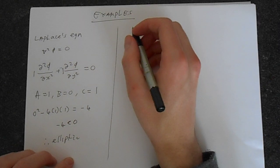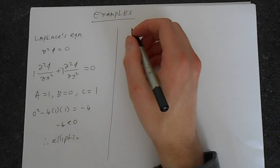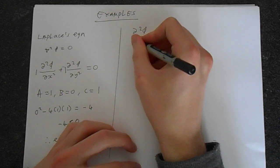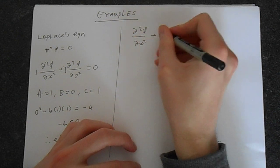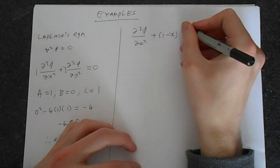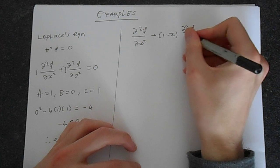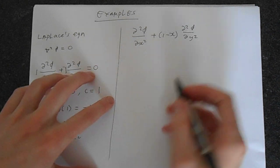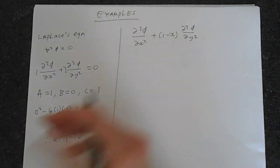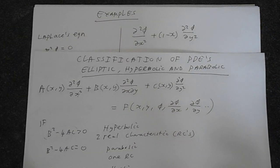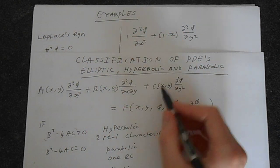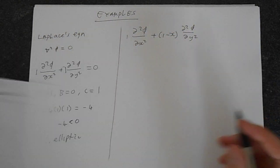Okay, more complicated example now. So imagine we had something like, very similar actually. We've got 1 minus x here. So this is similar to Laplace's equation, but we've got something else going on here with this 1 minus x. So again, compare this to what we've got here. a is going to be 1, and c is going to be 1 minus x.